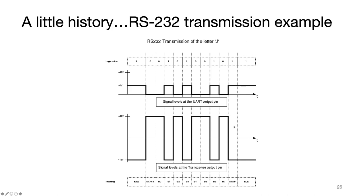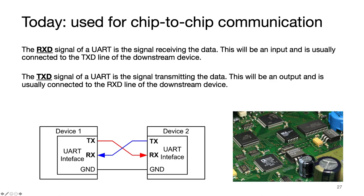For today's chips we don't need RS-232 chips in between kicking voltage up to 12 volts. We send one chip directly to another chip and don't need all those flow control lines from the DB9 connector. We're just going to use transmit and receive. The RXD signal receives data and the TXD signal is the signal transmitted.